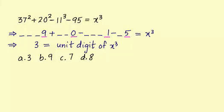Among these options, the cube of 3 is 27, cube of 9 is 729, cube of 7 is 343, and cube of 8 is 512. So, only number 7, whose cube is 343, has 3 as its unit digit. Hence, the value of x is 7 and option C is the correct answer.